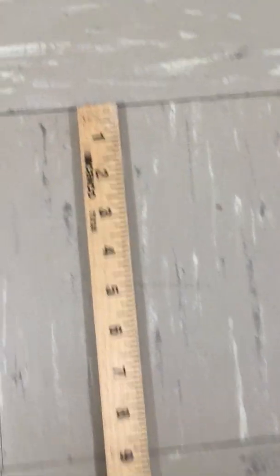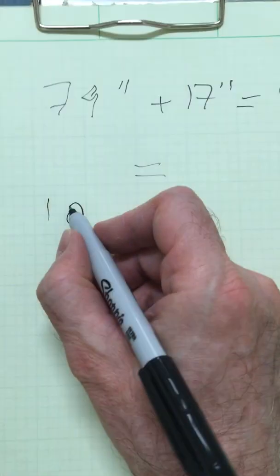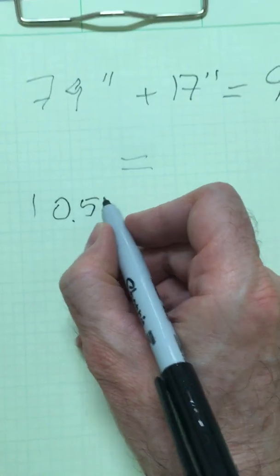And so if I count how many tiles, I have almost one, two, three, four, five, six, seven, eight, nine, ten, and that I'll call about a half. So this distance here is equal to 10.5 tiles.